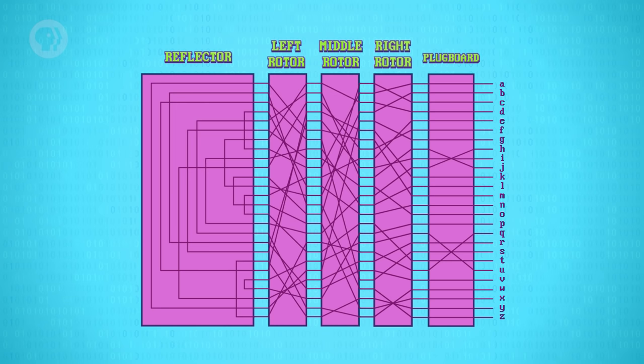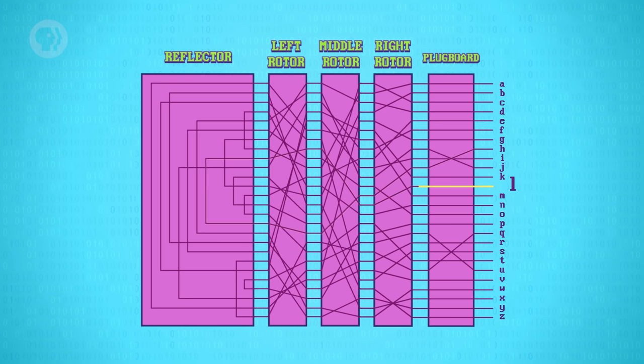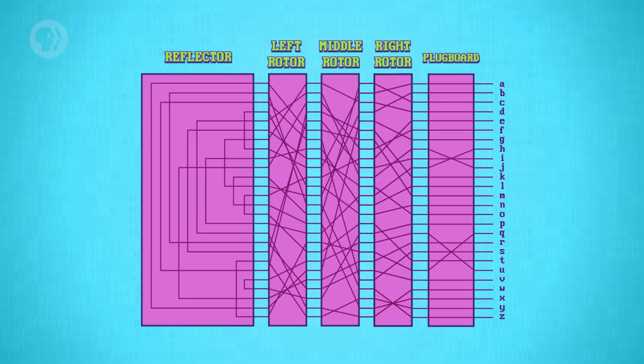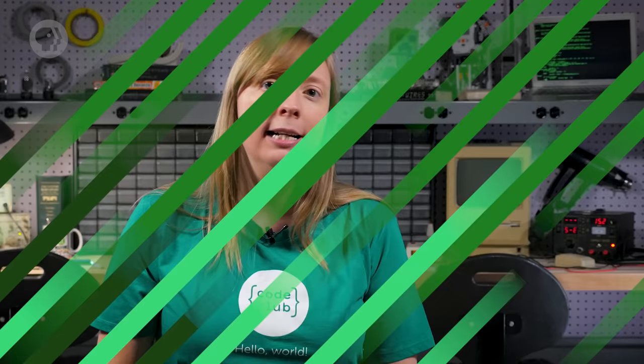With our simplified circuit, let's encrypt a letter on this example Enigma configuration. If we press the H key, electricity flows through the plugboard, then the rotors, hits the reflector, comes back through the rotors and plugboard, and illuminates the letter L on the lampboard — so H is encrypted to L. The circuit can flow both ways, so typing L would light up H. It's the same process for encrypting and decrypting, as long as the sending and receiving machines have the same initial configuration. Also note it's impossible for a letter to be encrypted as itself, which turned out to be a fatal cryptographic weakness.